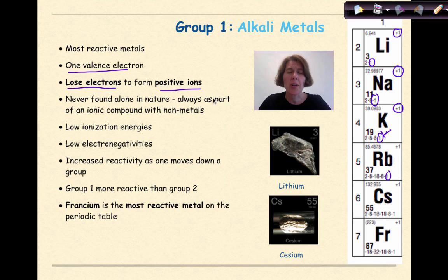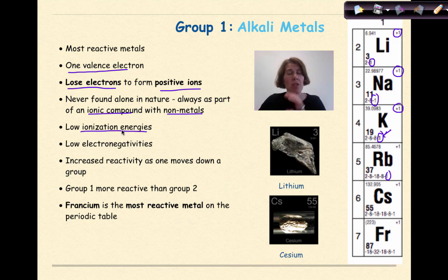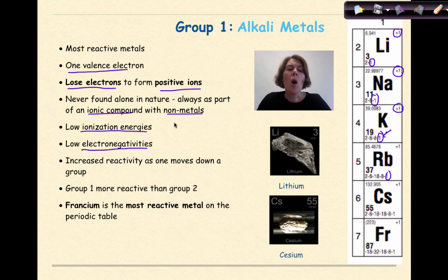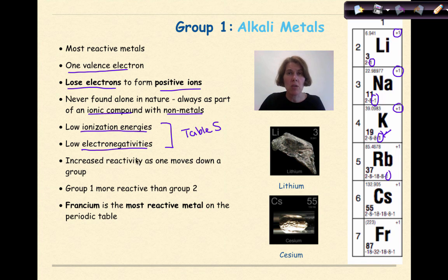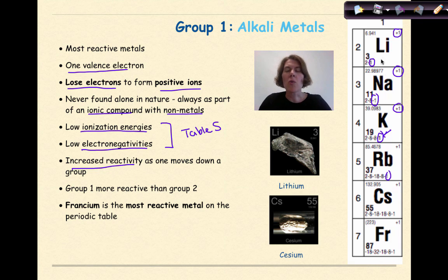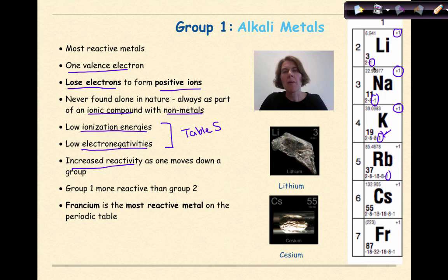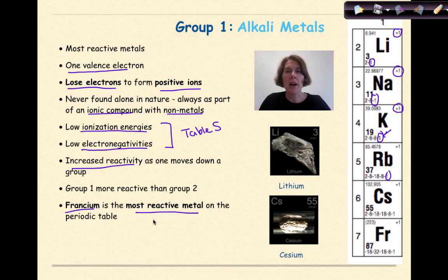They are never found alone in nature — they are always going to be part of an ionic compound with non-metals. They have low ionization energies, meaning it does not take a lot of energy to remove that valence electron, and low electronegativities, meaning they are not going to attract electrons to themselves. Both trends can be found on Table S of your reference table. They have increased reactivity as you move down the group — lithium reacting with water is exciting, but cesium is so reactive it might blow out the side of a glass dish. Group 1 is more reactive than Group 2, and francium is the most reactive metal on the periodic table.